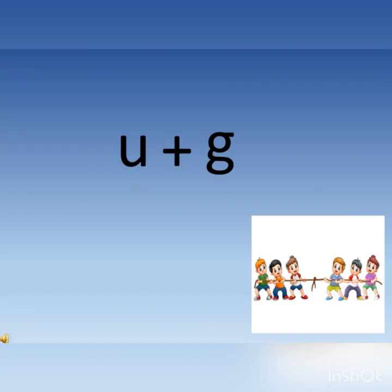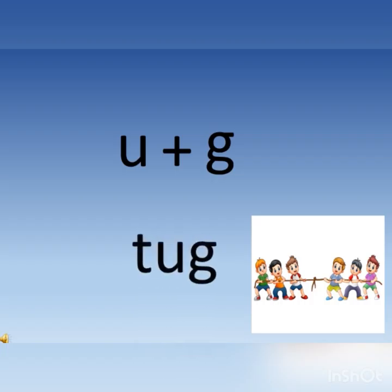Now moving to the next word. U plus G says ag. T, ag, tug. T, ag, tug.